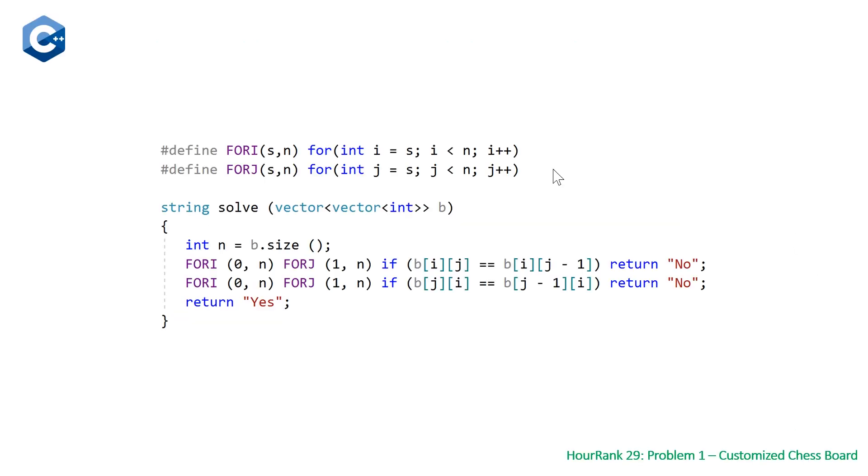So at the top of our solution here, we just have two macros for our two for loops that we're going to need. It just makes it faster to write your code. And then we have our function solve,